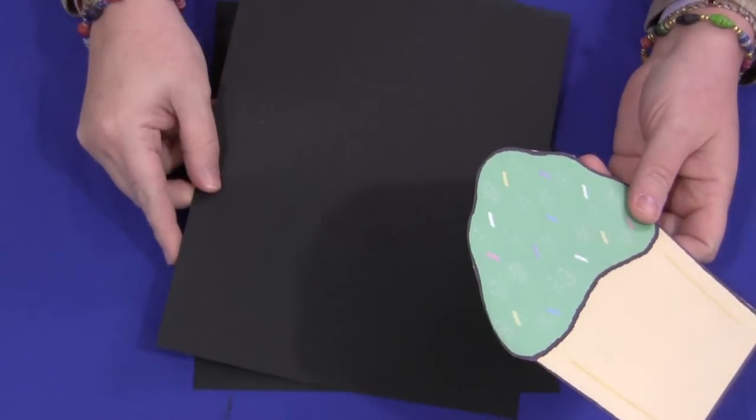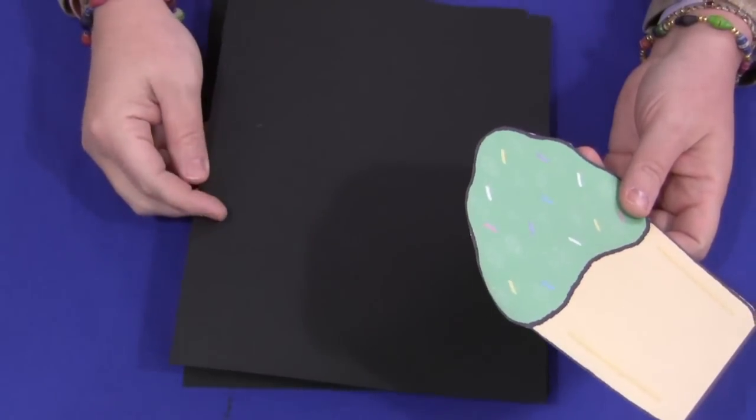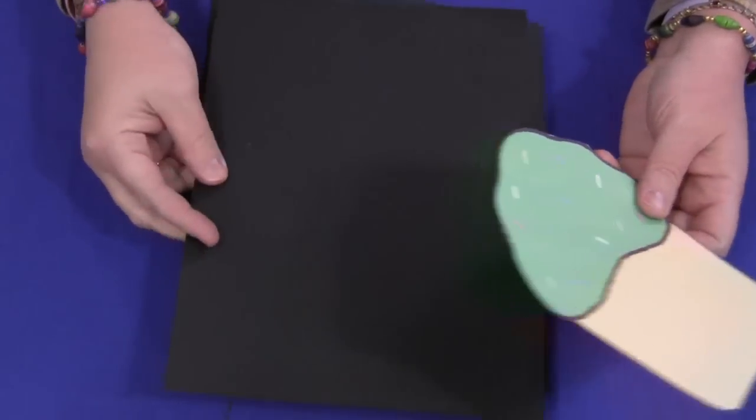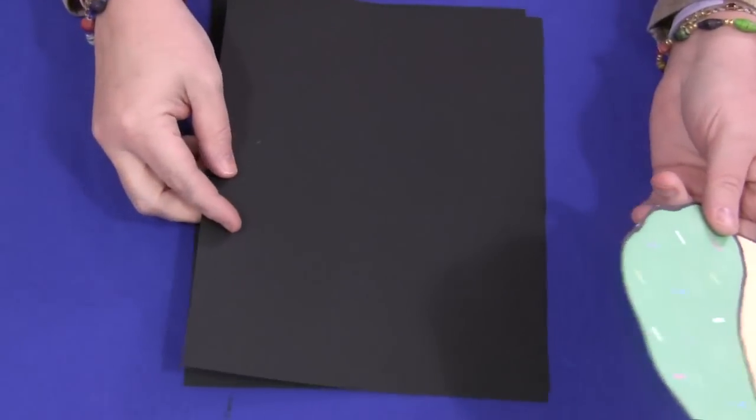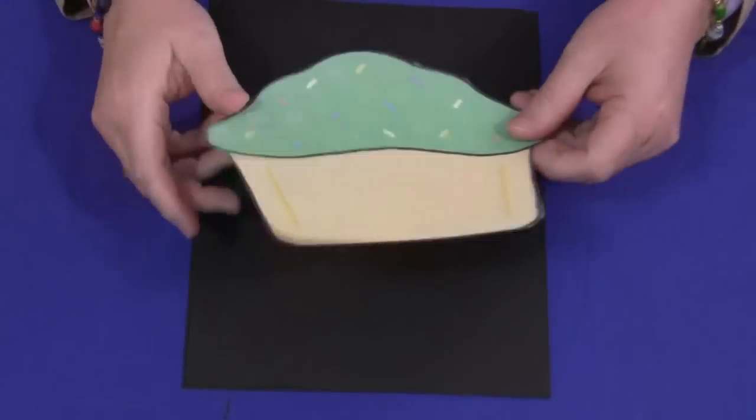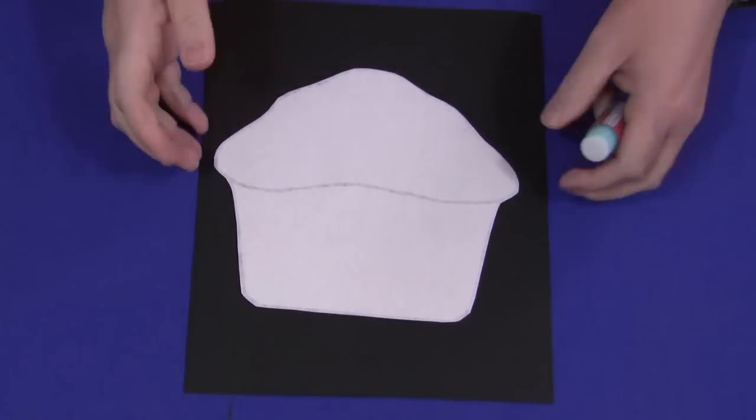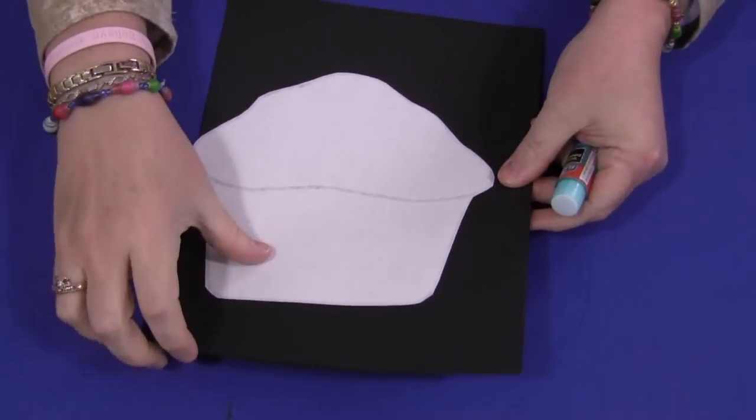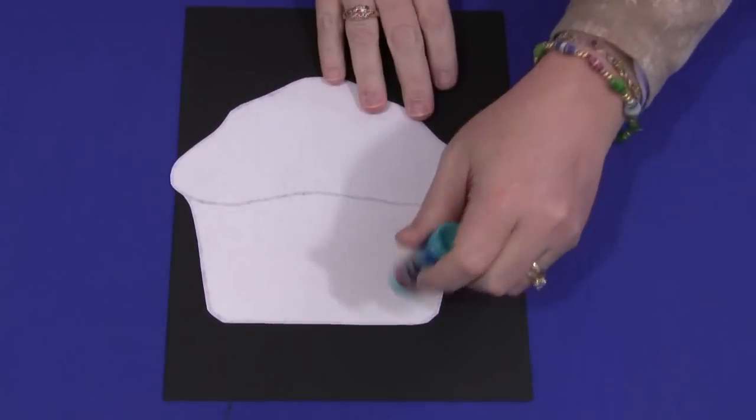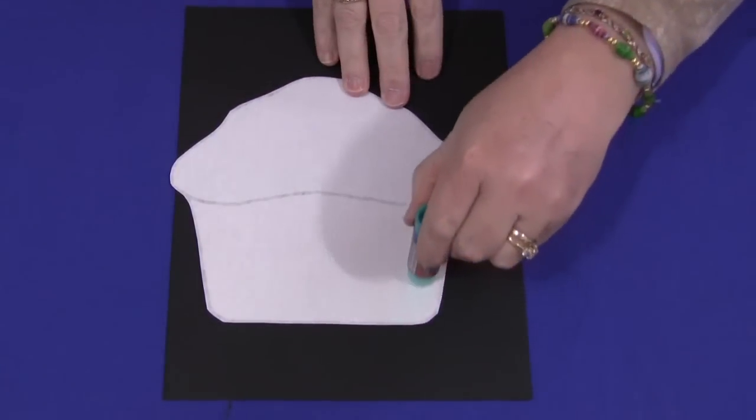And then you can either use construction paper, or if you want a little bit thicker, I have black cardstock paper here that can be purchased at any craft store. So you print it, and then the next step would be to glue it on. You actually need two pieces of the construction paper.